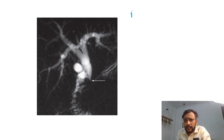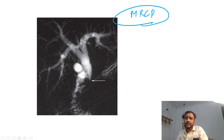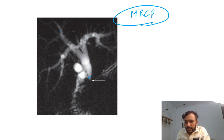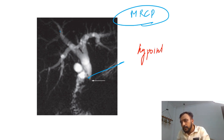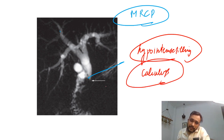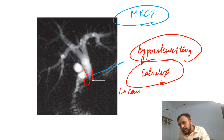This is one of my favorite MRCP images. In this image we can see that the common hepatic duct is dilated, the right and left hepatic ducts are dilated, the cystic duct is dilated, and there is dilatation of the intrahepatic biliary radicals. A hypointense filling defect can be seen in the cystic duct, which is due to a calculus within the cystic duct. This calculus is causing compression of the common hepatic duct.